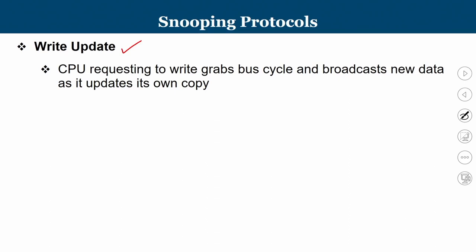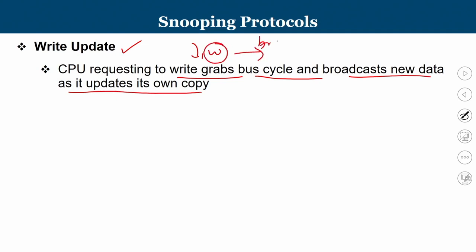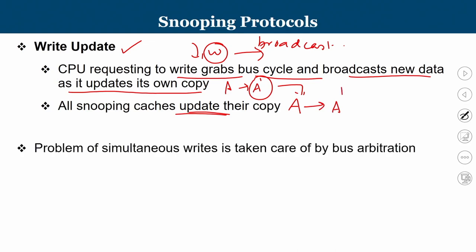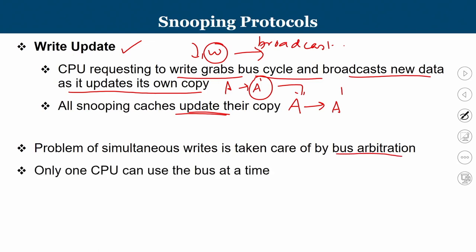In write update: the CPU requesting the write grabs the bus cycle and broadcasts the new data as it updates its own copy. All snooping caches receive the update — the old value A becomes A-dash — and update their local copies accordingly. The problem of simultaneous writes is handled by bus arbitration: only one CPU can use the bus at any given point in time.